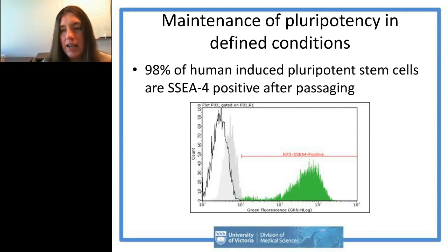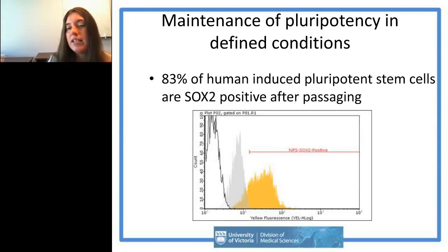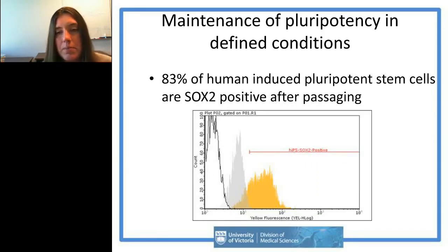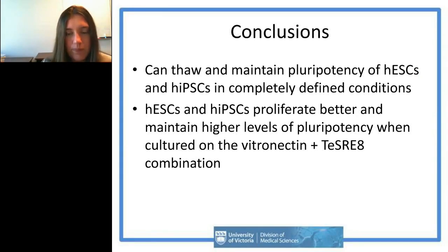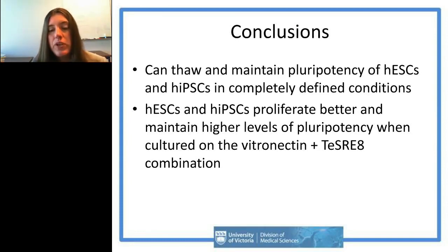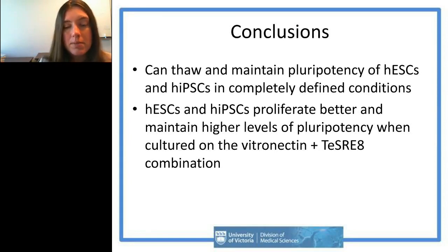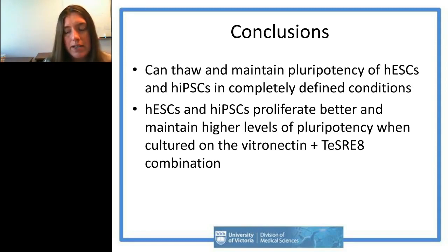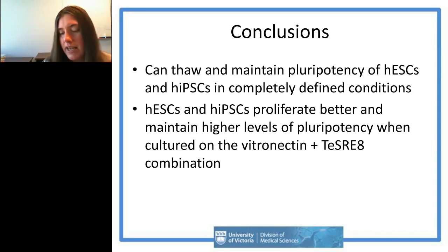SOX2 staining was also high at about 83 percent of human iPSCs being positive for this pluripotency marker after passaging. This vitronectin-TeSR-E8 combination is the system we currently use for all our cultures because it's defined, has reduced protein content, and maintains really high levels of pluripotency. We've also had no problems thawing cells directly into these defined systems and find pluripotent stem cells proliferate better and maintain higher pluripotency on this vitronectin-TeSR-E8 media combination.